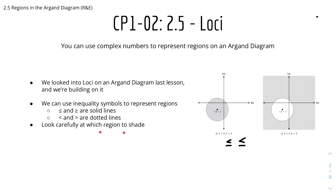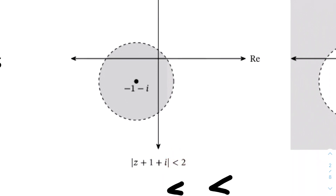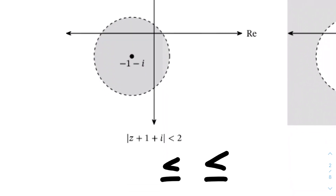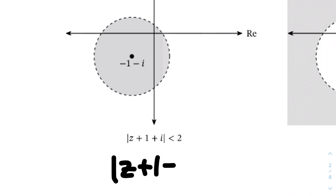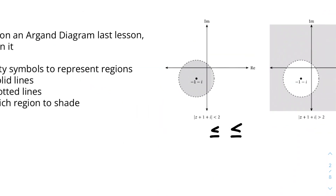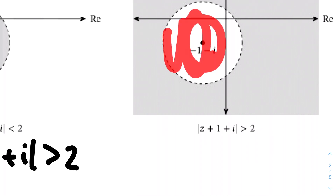We have to look carefully at what region to shade. For example, if the locus is less than, that means it's the region that has a distance of less than 2 from the center, which is minus 1, minus 1 — so basically the region inside the circle. But if the inequality were z plus 1 plus i greater than 2, you would shade any other region but the region in the center, because the region inside is less than 2.